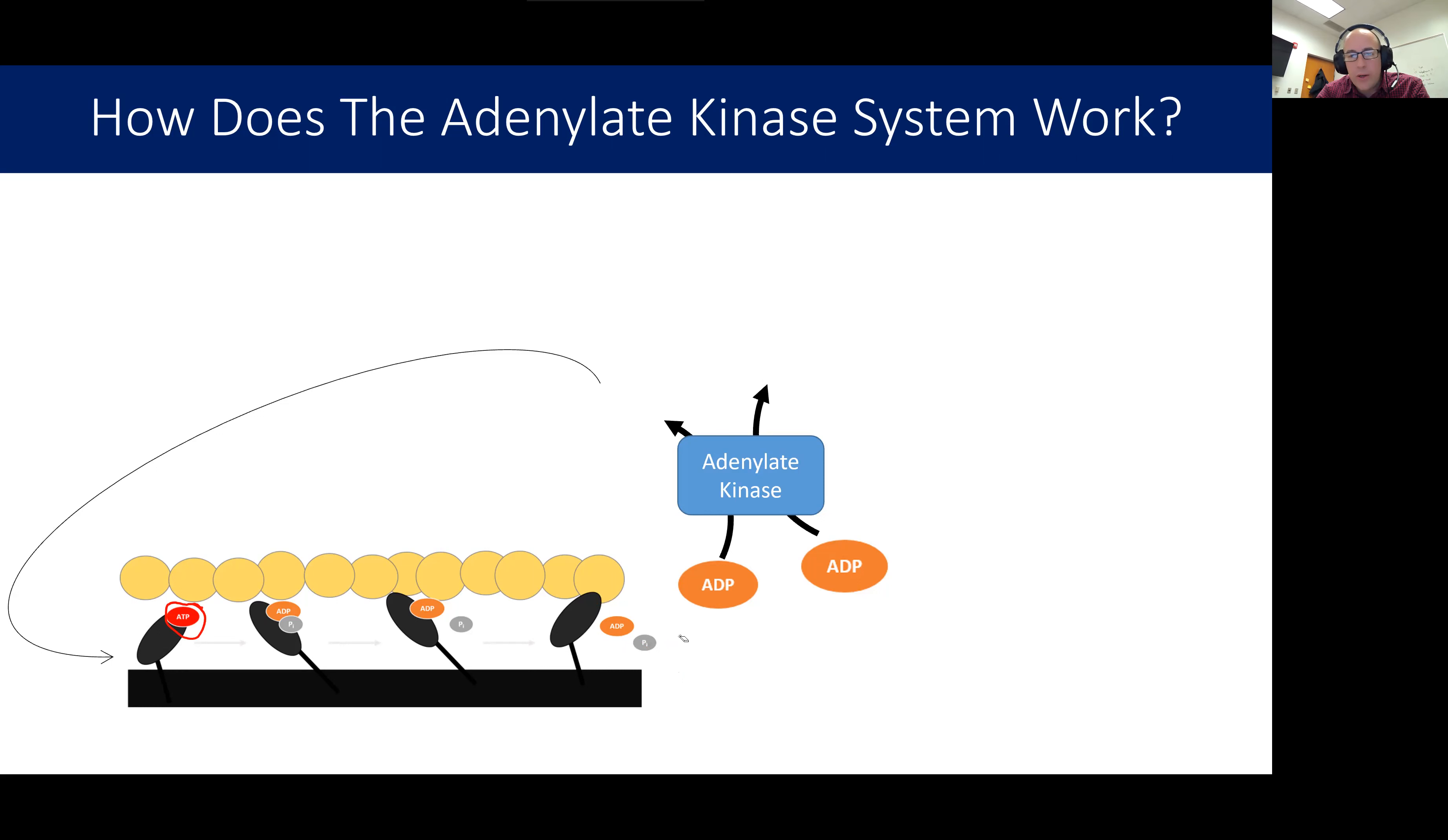So what we do with the adenylate kinase enzyme is this ADP that we've formed hooks up with another ADP that's been floating around, probably because it was a broken down ATP. And we're going to take a phosphate off of one and put it onto the other. So the consequence of that is the adenylate kinase just transfers over the phosphate group to one ADP to form an ATP. And now that ATP can go back through the crossbridge cycling or whatever process is using the ATP.